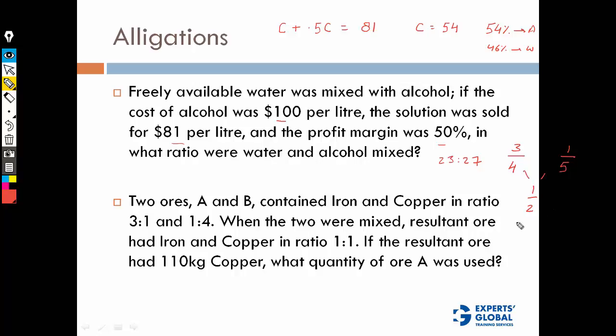The difference: this is 1/4 and this is 20% minus 50%, that's 30% or 3/10. To get a common ratio, multiply both sides by 20. Multiplying by 20, we get 6 here and 5 here. So the ratio of the two ores is 6:5.